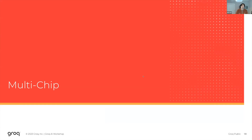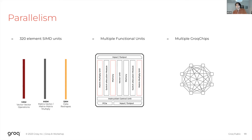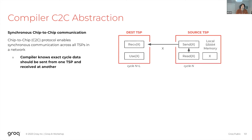Now let's talk about multi-chip. On a single chip you have two forms of parallelism: SIMD, as the functional units operate on 320-byte vectors at a time, and multiple functional units that can perform operations concurrently — for example, an MXM operation in the left hemisphere and another in the right hemisphere. We can also get parallelism by using multiple chips — we can just throw multiple chips at the problem.